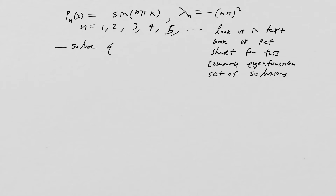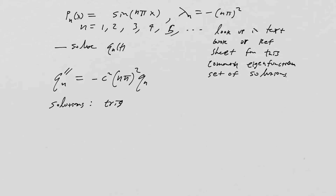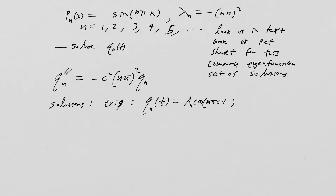The next step is to solve for the Q_N(T) problem. We have Q_N double prime equal to negative C squared times (N pi) squared times Q_N. This is a second-order problem and its solutions are trig functions: Q_N(T) equals A_N cosine(N pi C T) plus B_N sine(N pi C T), for N equals 1, 2, 3, 4, and so on.